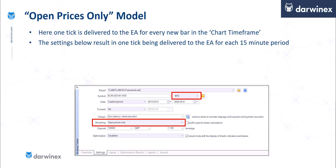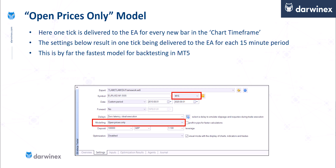Let's now move on to the final model: Open Prices Only. In this model, only one tick is delivered to the expert advisor for every new bar in the chosen time frame. With the M15 chart selected, this results in just one tick every 15 minutes. However, setting this to M1 gives one tick per minute, and using M1 data in this way tends to be my preferred mechanism for testing, given that my trading systems have an average trade duration of between 8 and 24 hours.